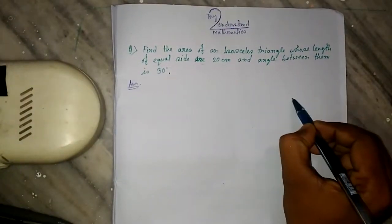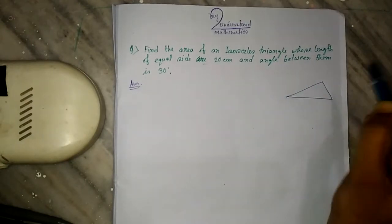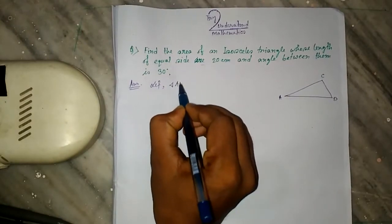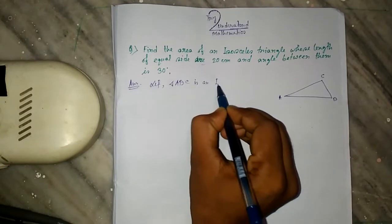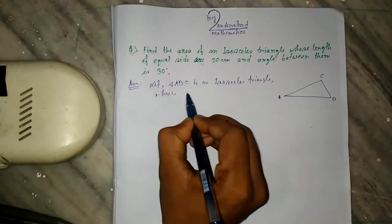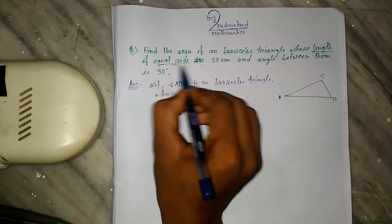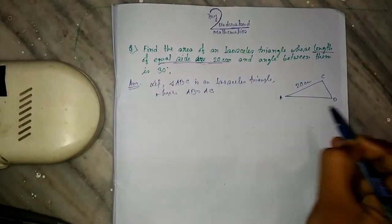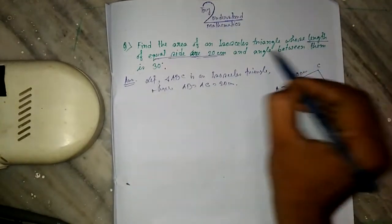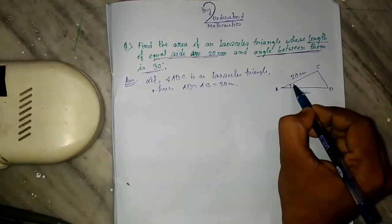Let us draw this picture. ABC is an isosceles triangle whose equal sides are AB equal to AC. The given condition is that the equal sides have length 20 cm, so AB is 20 cm and AC is 20 cm. Also, the angle between them is 30 degrees, so angle A must be 30 degrees.